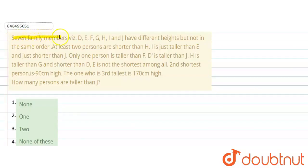The question says, 7 family members D, E, F, G, H, I, J have different heights but not in the same order.